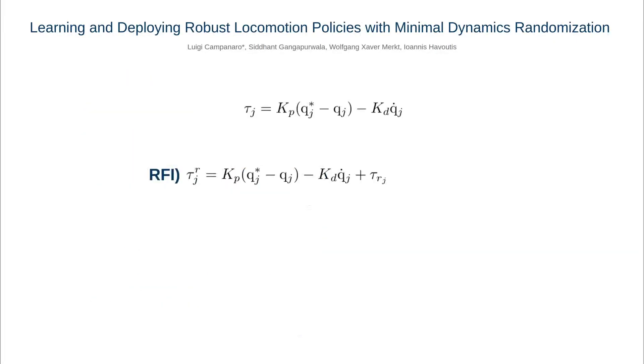We can now introduce the random force injection, which consists of adding a perturbation at the impedance control level by injecting a random feedforward torque sampled from a uniform distribution at each time step.